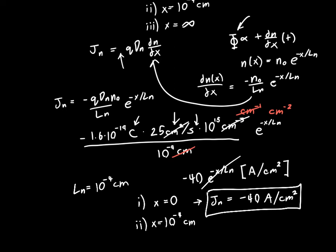In that case, we get Jn is just negative 40 times e to the minus 1, which becomes minus 14.7 amperes per centimeter squared.